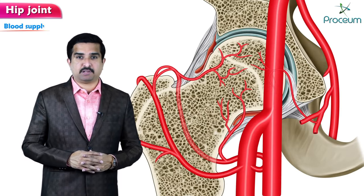The blood supply of the femoral head is clinically very important and quite variable. The three main arteries supplying the femoral head are: the lateral epiphyseal branch of the medial circumflex femoral artery and the ascending branch of the lateral circumflex femoral artery — both ascending from the deep femoral artery. These leave the femoral head vulnerable to avascular necrosis in the presence of a femoral neck fracture, as these vessels are easily ruptured with femoral neck fractures.